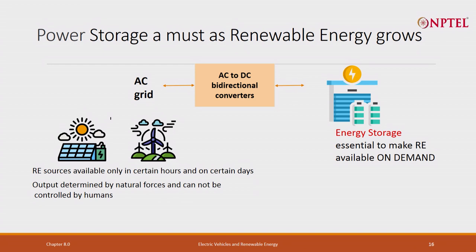Fundamentally, what do you have to do? We have all this AC grid in the country from renewable energy or from fossil fuel. You do an AC to DC converter bidirectional — you will convert this side as well as the storage. Then you have to have energy storage available on demand. Whenever there is surplus, dump the electricity there. Whenever there is deficit, bring it out.